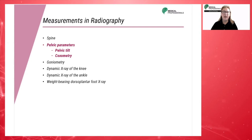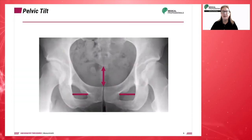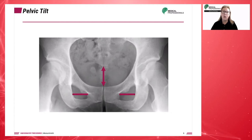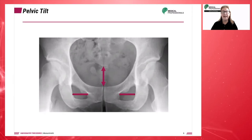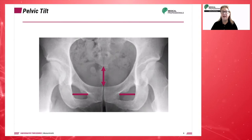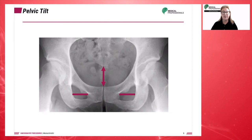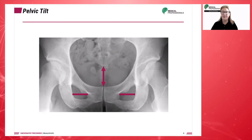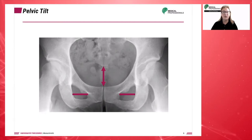Let's move to measurements in pelvic imaging. Pelvic tilt is an asymmetry in the pelvis where the pelvis is lower on one side than the other. Pelvic tilt is measured on an AP pelvic radiograph as the distance between the upper edge of the symphysis pubis and the mid portion of the sacrocoxygeal joint. As a rule of thumb, the distance should be around 32 millimeters in men and 47 millimeters in women.